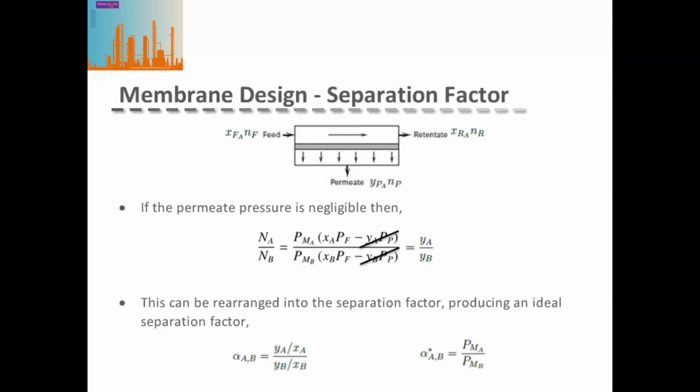Often the permeate pressure is much less than the feed retentate side pressure. So if we assume that the permeate pressure is negligible, we can cancel out the terms relating to the composition in the permeate times the permeate pressure, which leaves us with the flux being dependent on the permeability, the mole fraction of each component, and the pressure on the feed retentate side.